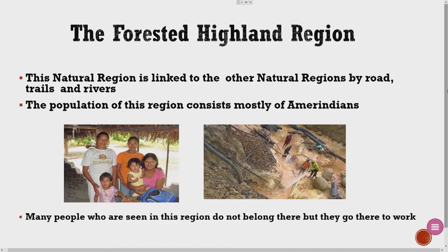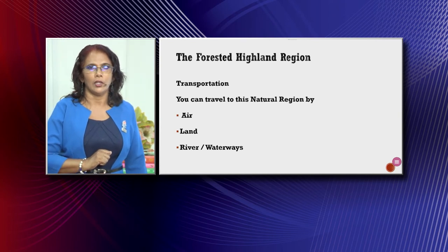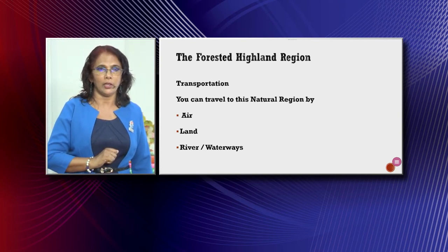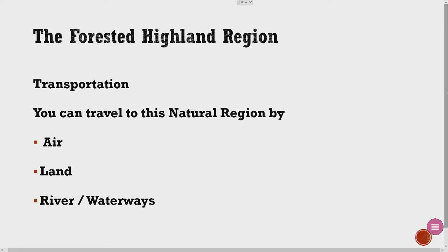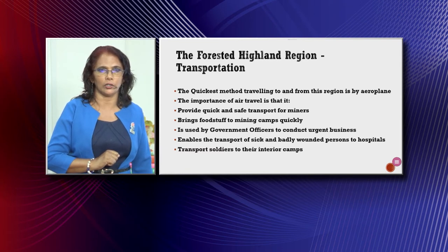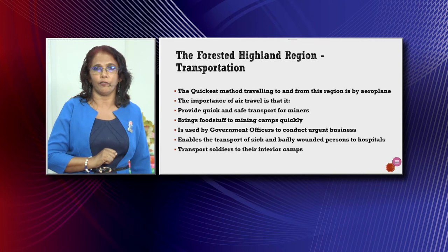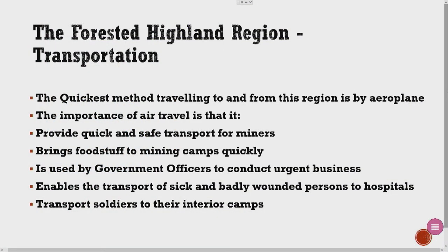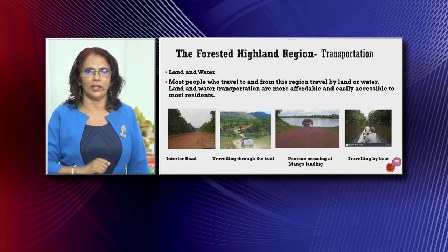The forested highland region transportation: you can travel to this region by air, land, river, or waterways. The quickest method of traveling to and from this region is by aeroplane. The importance of air travel is that it provides quick and safe transport for miners, brings foodstuff to mining camps quickly, is used by government officers to conduct urgent business, enables the transport of sick and badly wounded persons to hospitals, and transports soldiers to their interior camps.